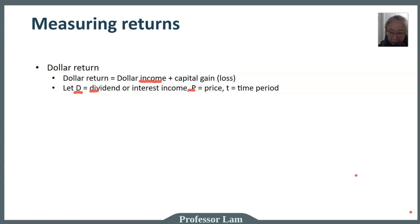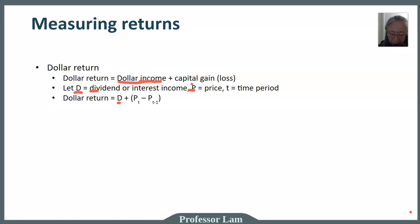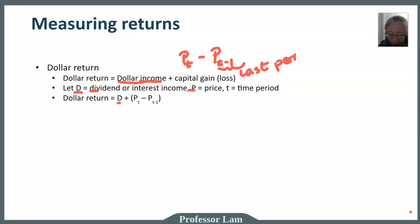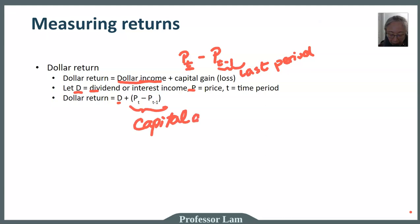The dollar return can be written as D — your dollar income — plus capital gain, which is your selling price P(t) minus your purchase price P(t−1). T minus one simply means last period, last year, or last month, and t is the current period. So dollar return equals the dividend or income component plus the capital gain or capital loss.